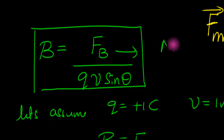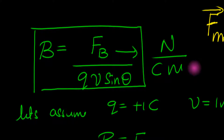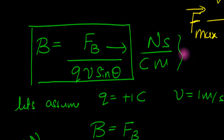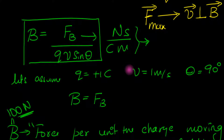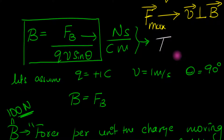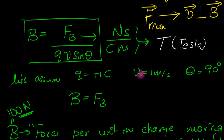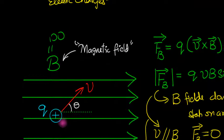This is a very ugly unit — no one calls it newton-seconds per coulomb-meter. Instead, we call it a Tesla, abbreviated T. Tesla was the key figure in electromagnetism and the main man behind the AC electricity we all enjoy today. The magnetic field unit is named after him.